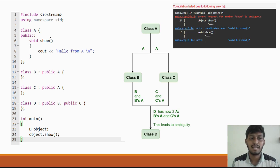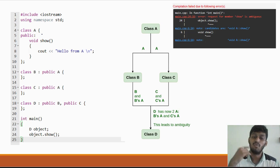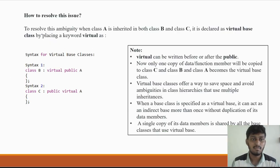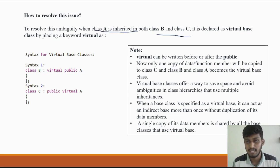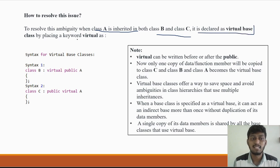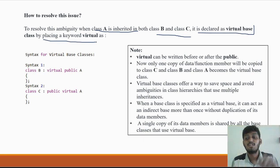This is how we solve this issue. To resolve this ambiguity, class A is inherited in both class B and class C as a virtual base class by placing the keyword 'virtual'.